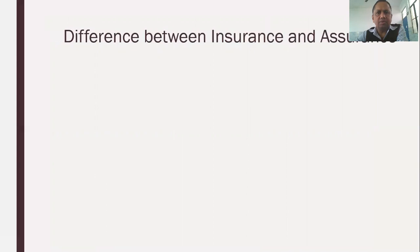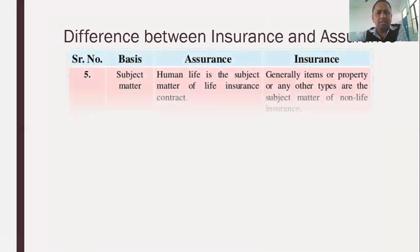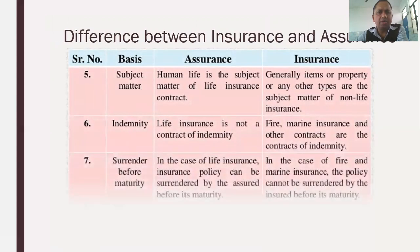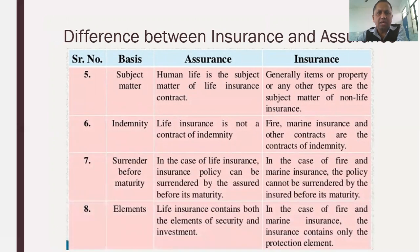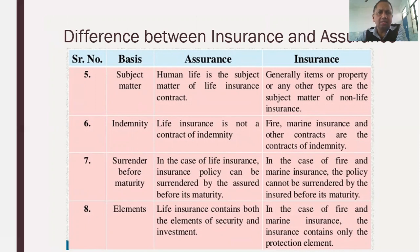The fifth basis is subject matter. In assurance, human life is the subject matter of the life insurance contract. In insurance, the subject matter is generally property or any other type, which forms the subject matter of non-life insurance or general insurance.